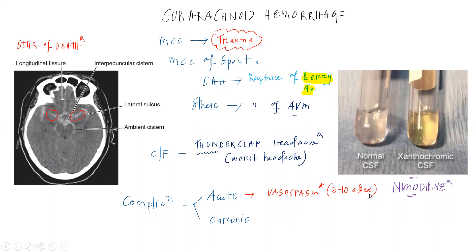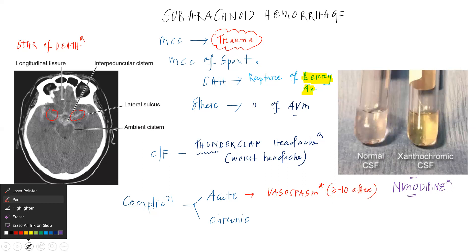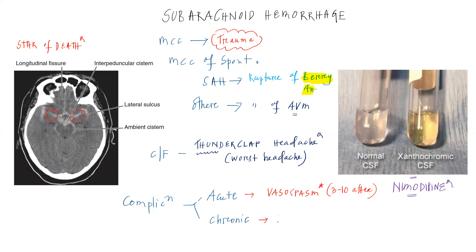One chronic complication to remember is hydrocephalus. When the subarachnoid hemorrhage starts healing, fibrous adhesions can form in the subarachnoid space. These fibrous adhesions cause decreased absorption of CSF, leading to increased CSF and hydrocephalus. They can cause both obstructive and non-obstructive hydrocephalus depending on which part of the subarachnoid space is affected.